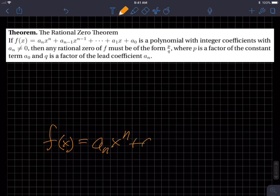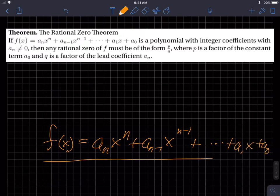f of x, a sub n x sub n, plus a sub n minus 1 x sub n to the x, x to the n minus 1, plus dot dot dot, plus a1x to the 1, but we don't write that, plus a sub 0. So that's my generic or general polynomial function.